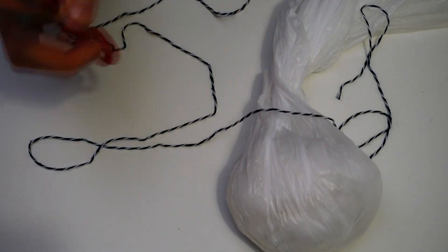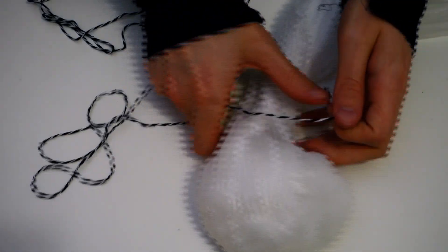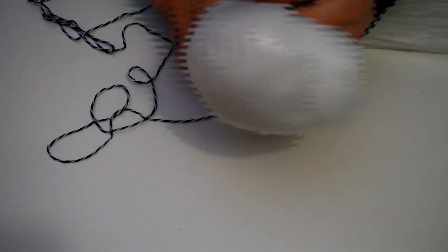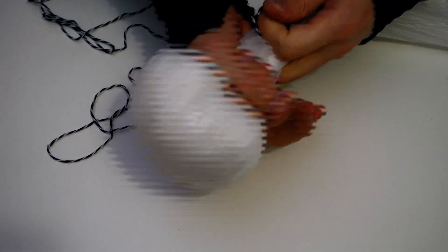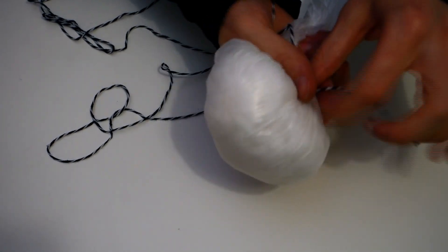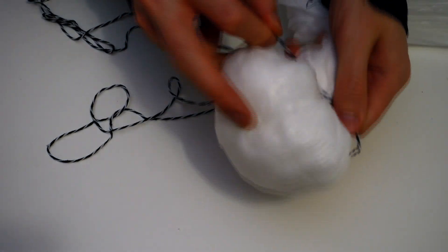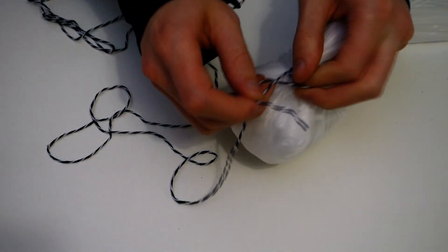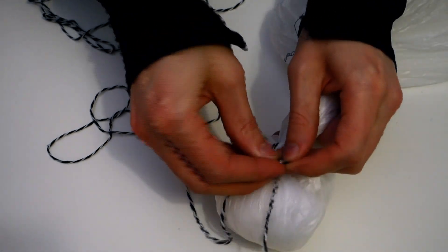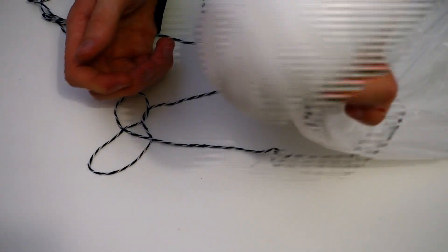Next we're going to need our string and a pair of scissors too. This part is to tie around the ghost's neck so that the head stays in the position. So just again pull the bag through. Wrap the string around once, twice, and then tie it. Nice and secure.